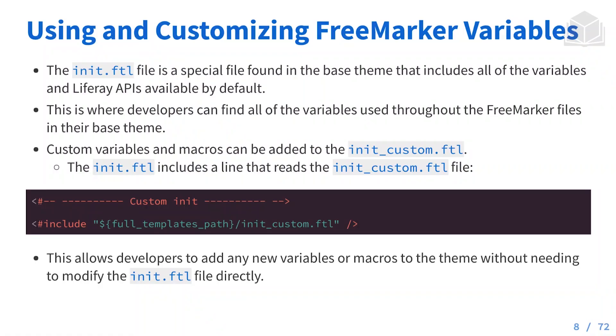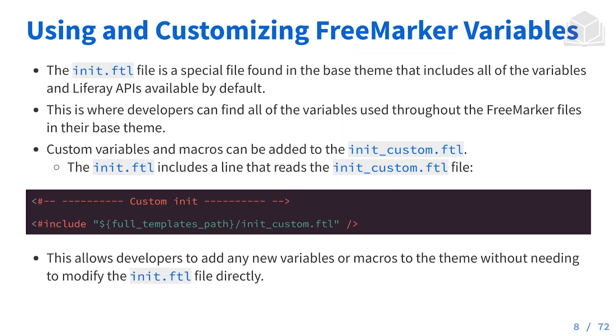Something else we'll see in our theme is called the init_custom.ftl. The init.ftl — which we'll find in the build folder — is the file that links all of our FreeMarker variables to our Java objects, our Liferay API. This is a very important file; we don't want to mess it up, but we may want to add to it. The way this works: if you go all the way to the bottom of the init.ftl, you'll see that it is including the init_custom. So in our source folder, we can include the init_custom, add all of our custom variables to that file, and it will simply append to the end of the init.ftl on build. This is the best practice for adding our own custom variables without removing any of the existing init.ftl variables.